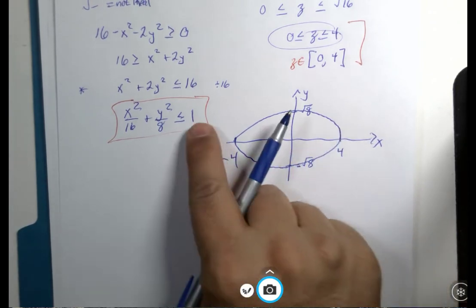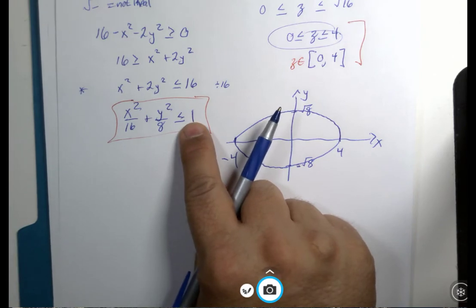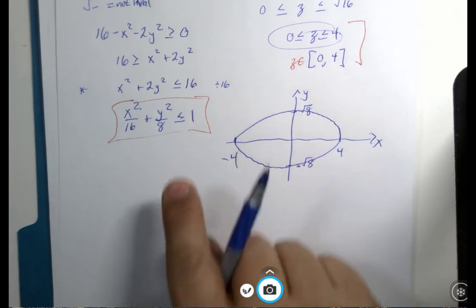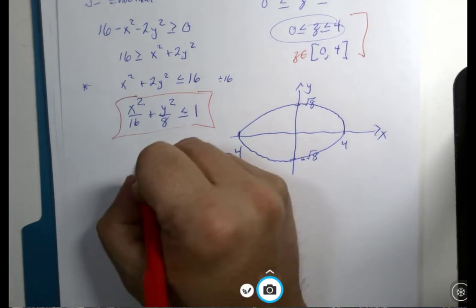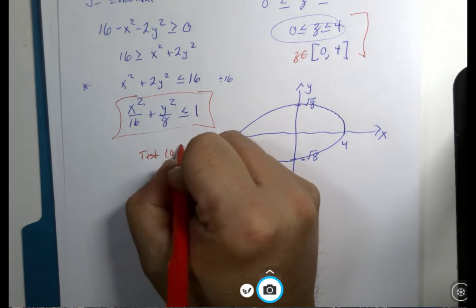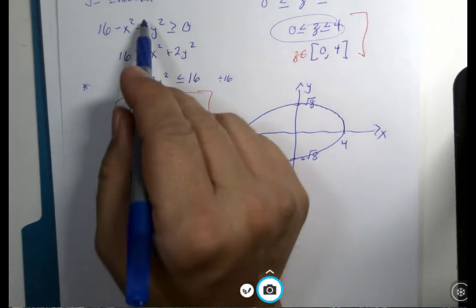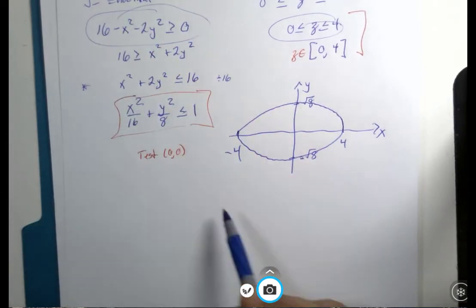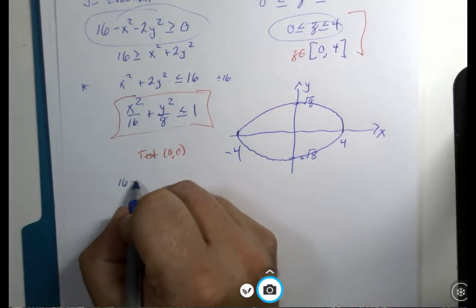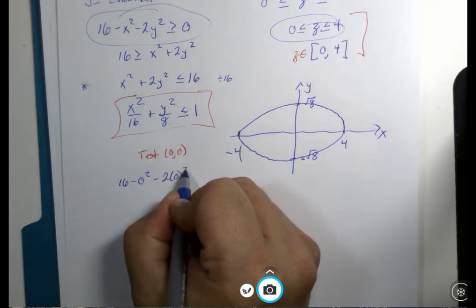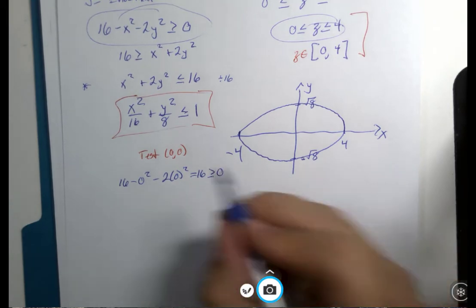It says less than or equal to. Maybe I'm supposed to know this particular type of inequality, but maybe I'm not as familiar with it. If you test the point (0,0) in our original algebra to see if this is greater than or equal to zero like it says: 16 - 0² - 2(0²) = 16. That's definitely greater than or equal to zero, so that means (0,0) is a good point.